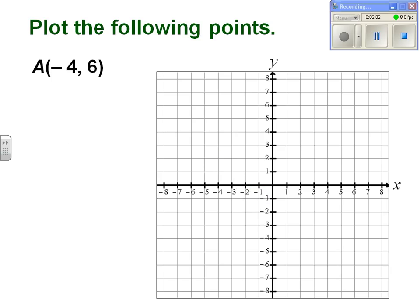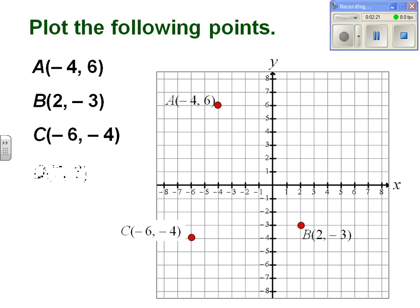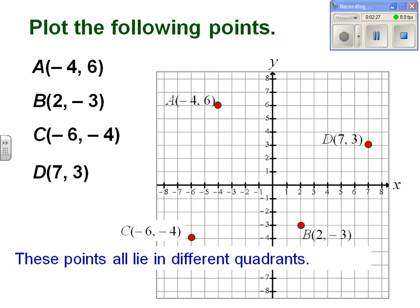Point A(-4, 6): -4 along the x-axis, 6 along the y-axis, and that's where I get my point A(-4, 6). Similarly, B(2, -3), C(-6, -4), D(7, 3). You may have noticed that all these points lie in different quadrants.